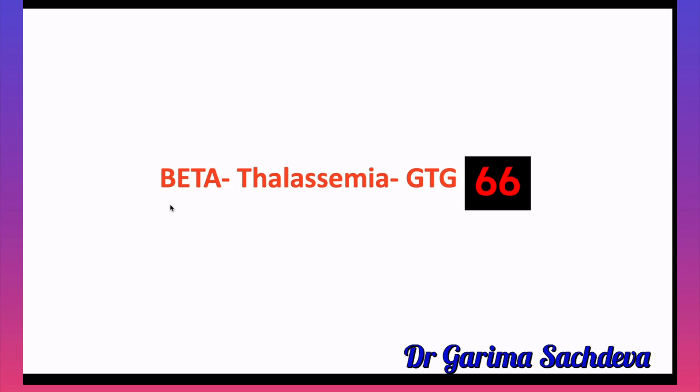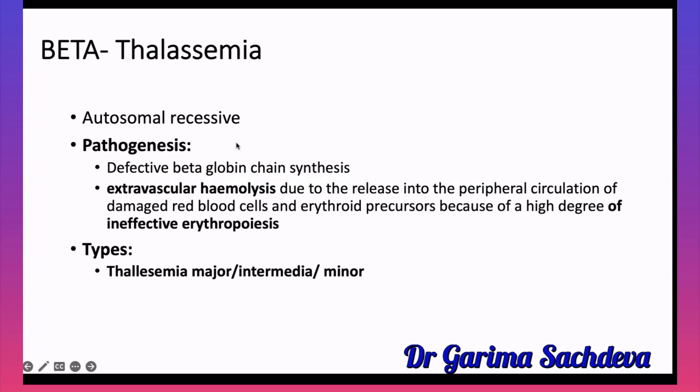Beta thalassemia is an autosomal recessive disorder. Normally, hemoglobin has two alpha chains and two beta chains. In beta thalassemia, there are defective beta chains. It is an autosomal recessive hemolytic anemia caused by defective beta globin chain synthesis.